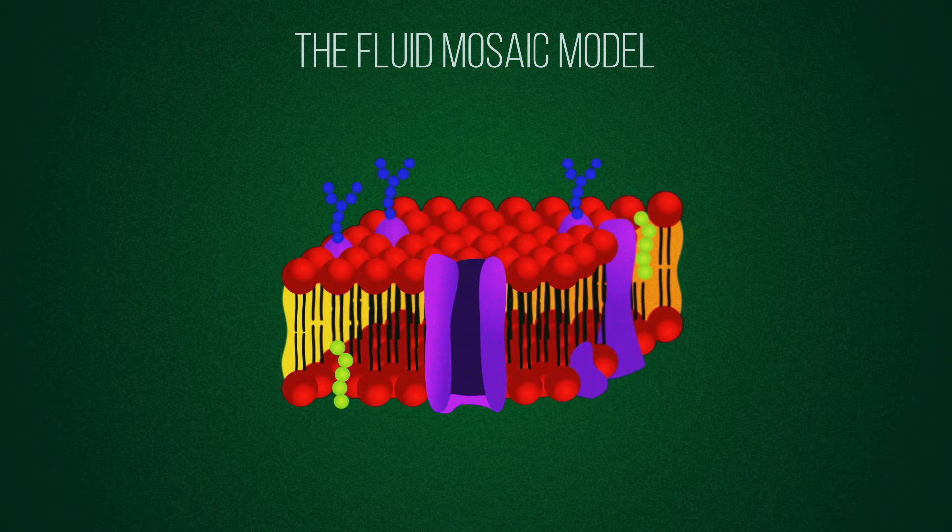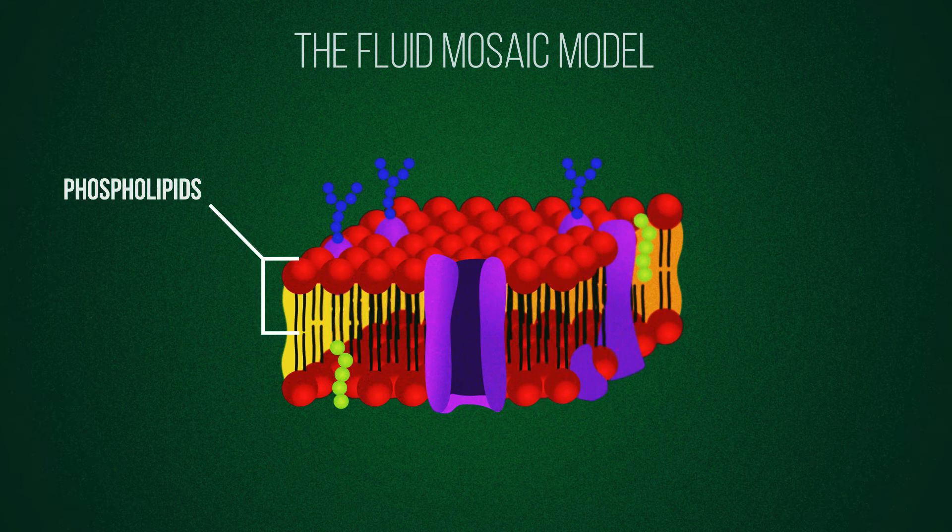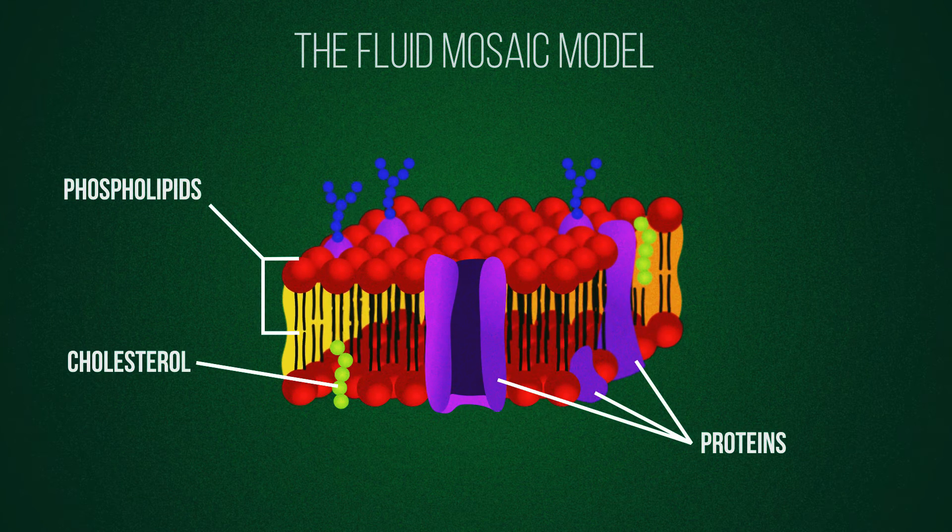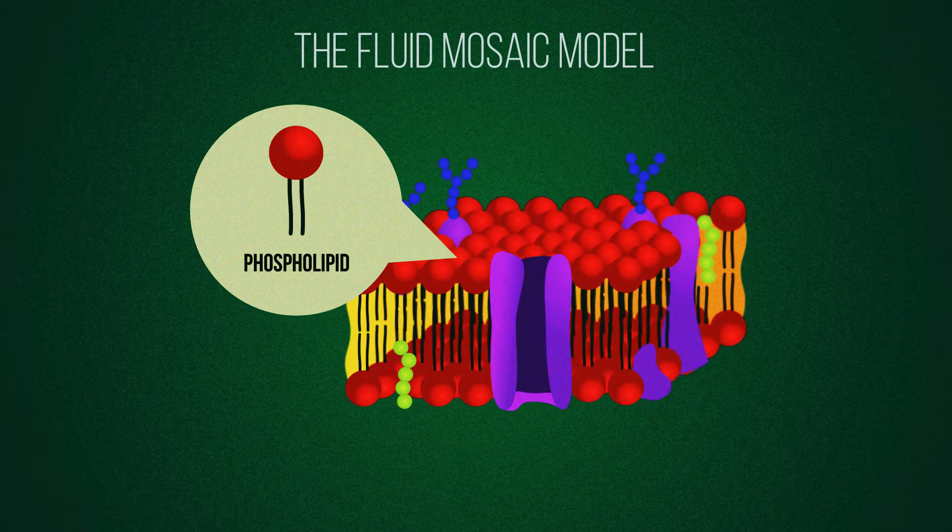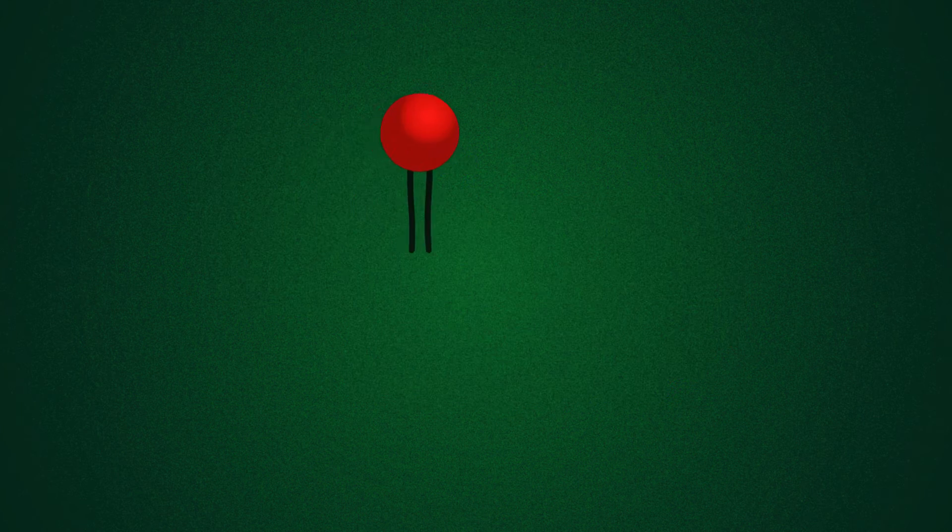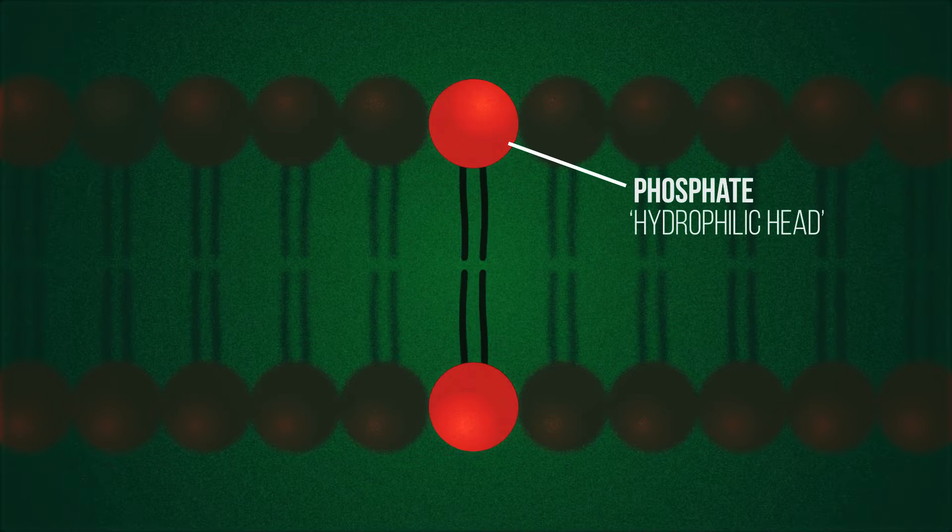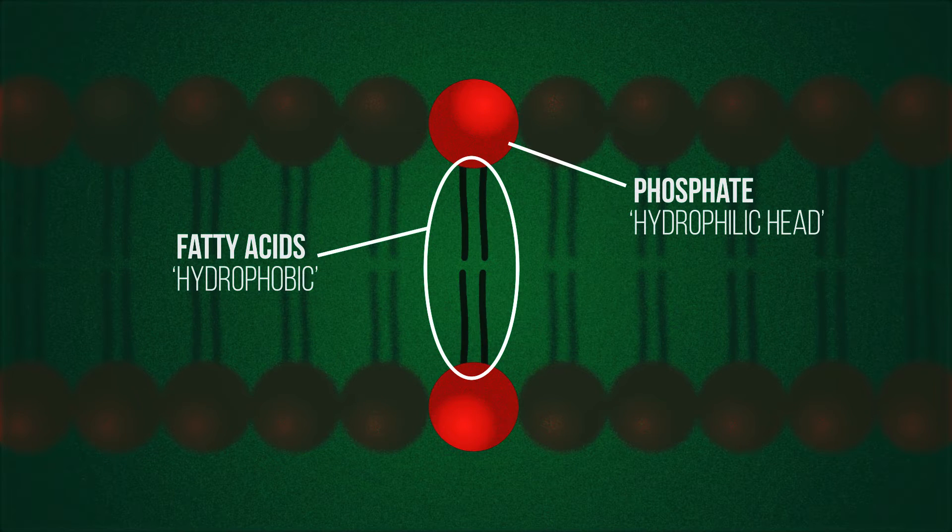Cell membranes are made up of three main things: phospholipids, cholesterol and proteins. The phospholipid bilayer is made of individual phospholipids. These phospholipids arrange themselves into two layers, with their heads pointing outwards and their tails pointing inwards.